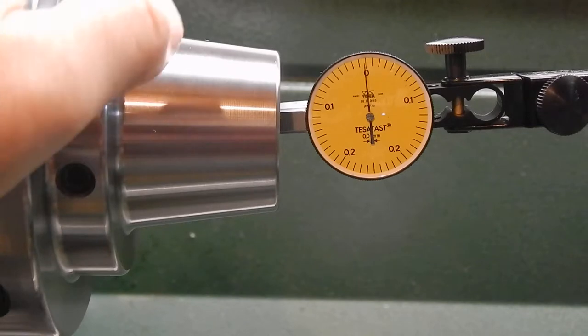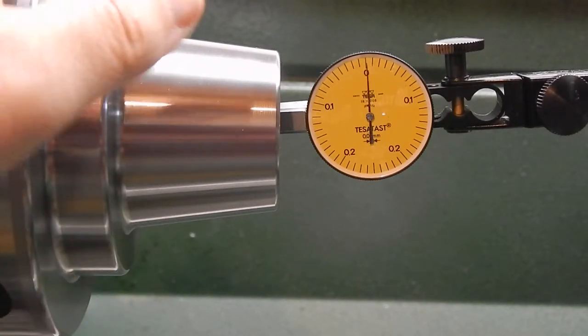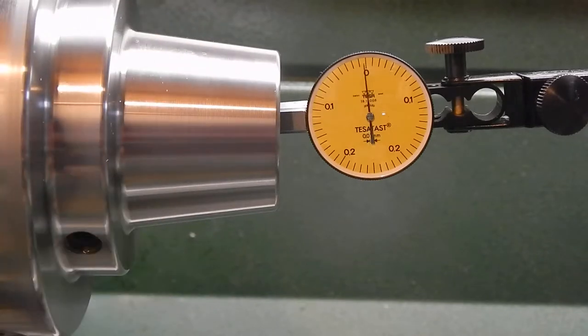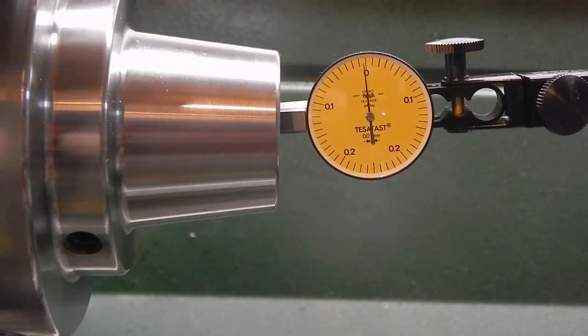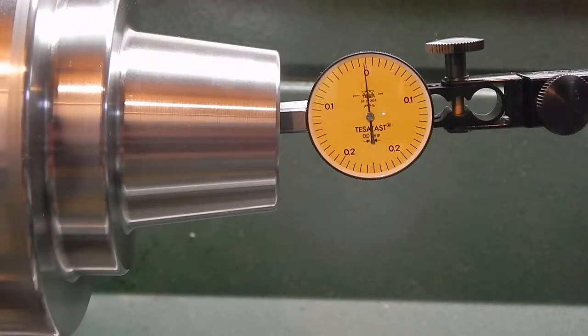You see a little bit of fluctuations. This is because the journal is very short and has some little variations in roundness, I believe, but overall it's less than one hundredth of a millimeter. Let's just move the whole thing to the other journal, which is the tapered journal, and set it up on zero.